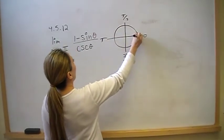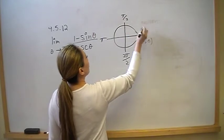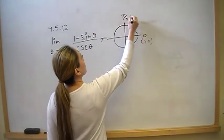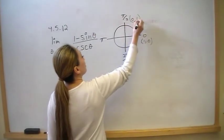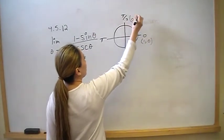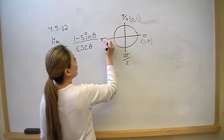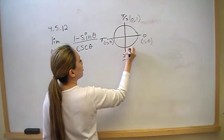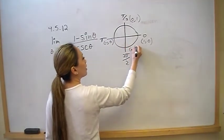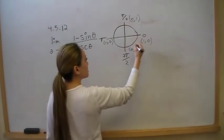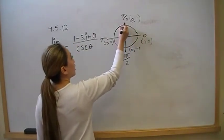At 0, cosine is 1 and sine is 0. At pi over 2, we have cosine is 0 and sine is 1. At pi, we have cosine is negative 1 and sine is 0. And we're looking at the point pi over 2 right here on the unit circle.